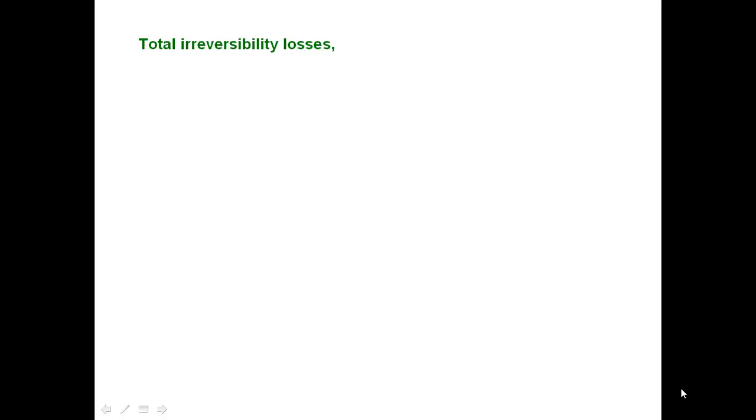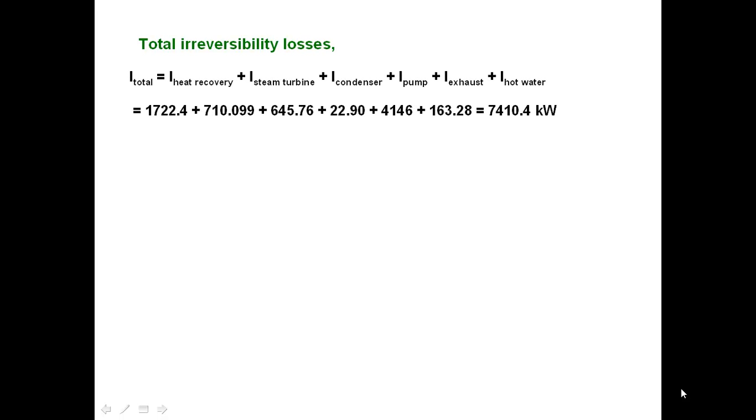The total irreversibility in steam power plant is the sum of four components and two hot fluids. Therefore, I total is equal to sum of I's of heat recovery, steam turbine, condenser, pump, exhaust and hot water. After substituting the corresponding values of irreversibility, the total irreversibility is equal to 7.41 megawatts.